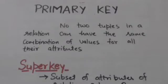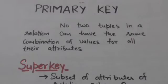Hello friends, welcome back. In this tutorial we will study about primary key in the relational model. A relation is defined as a set of tuples. No two tuples in a relation can have the same combination of values for all their attributes.